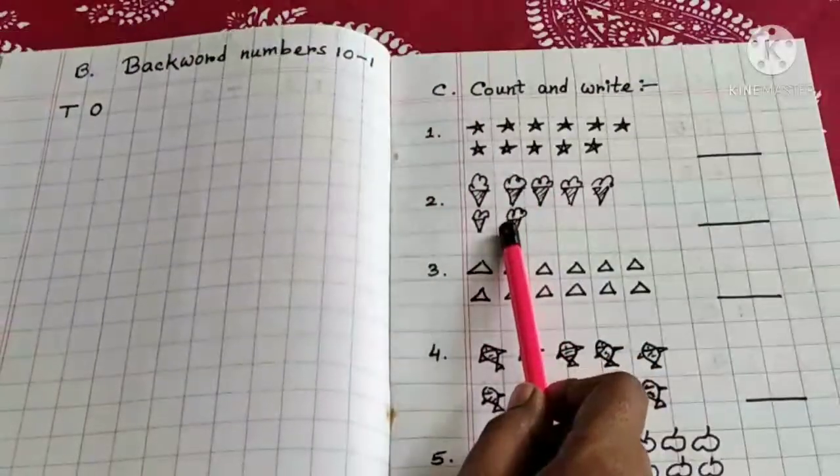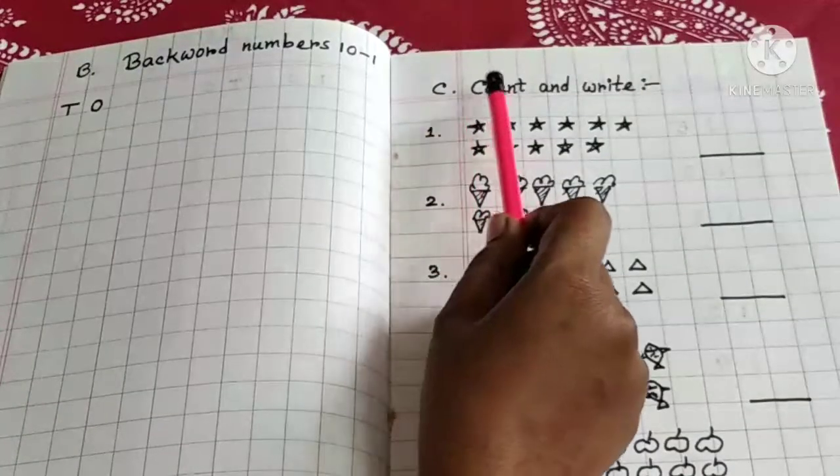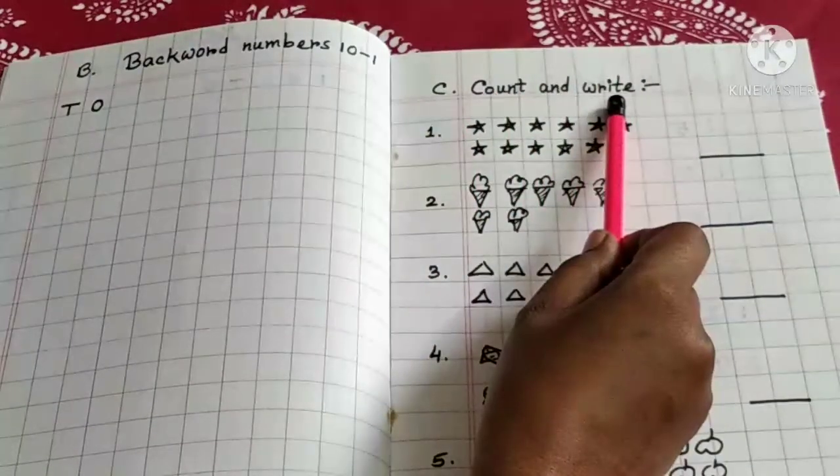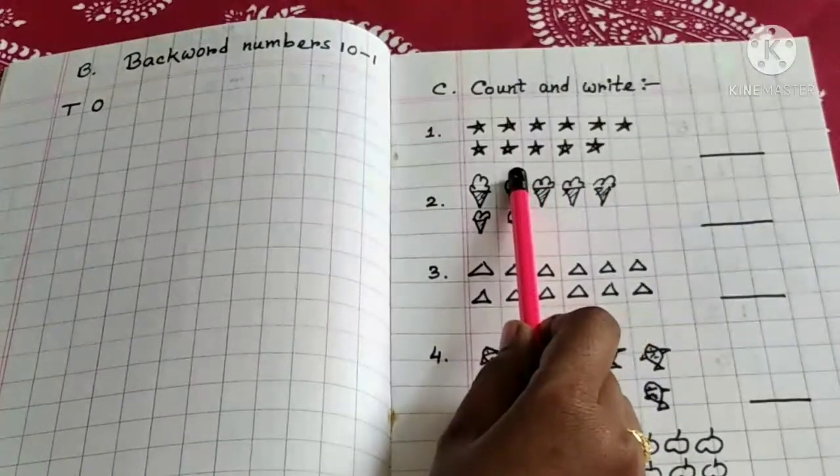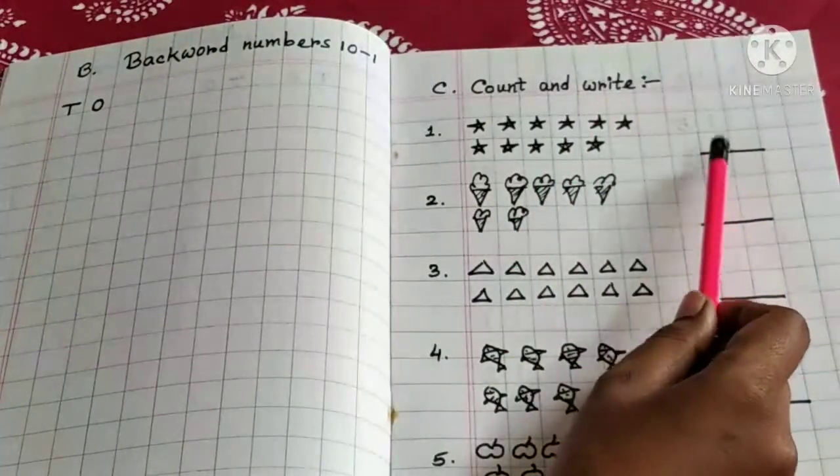Next page, question number C, count and write. You need to count up the objects and write the number here. Okay?